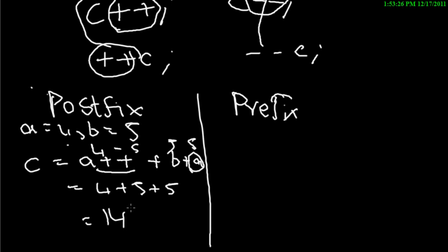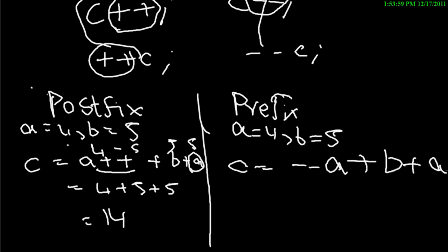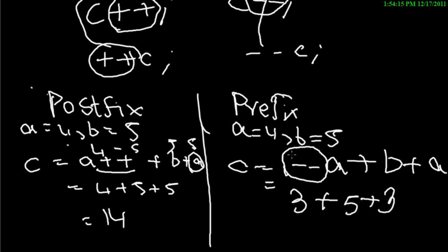In a prefix operator, the value of the variable is changed first and then used to evaluate the expression. So if a equals four and b equals five, and you write 'c = --a + b + a': since this is a prefix operator, a is decremented first to three, then used. So it becomes three plus five plus three, which is eleven.